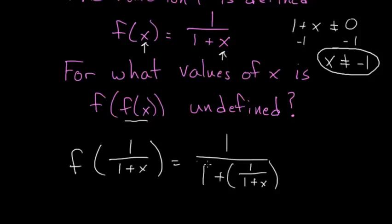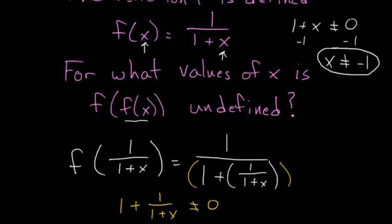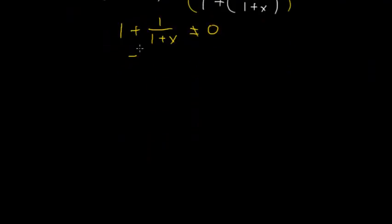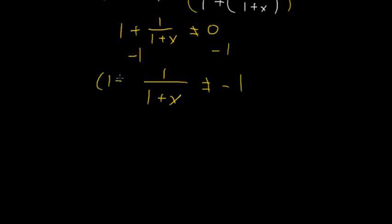We're looking at where the denominator equals 0 to find at what x values this entire denominator equals 0. So 1 plus 1 over 1 plus x cannot equal 0. Subtracting 1 from each side, 1 over 1 plus x cannot equal negative 1. Multiplying each side by 1 plus x to cancel the denominator, and after simplifying, the numerator and denominator cancel.